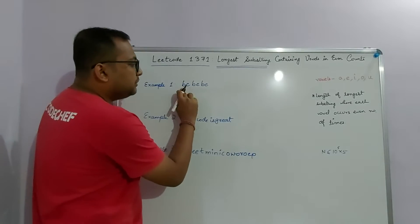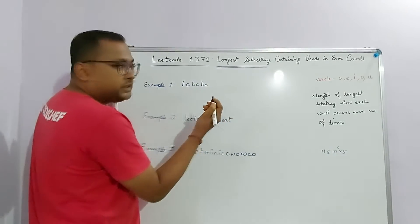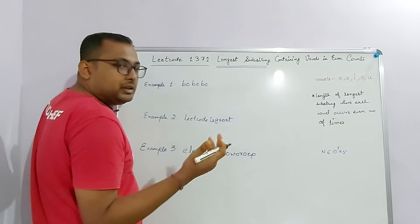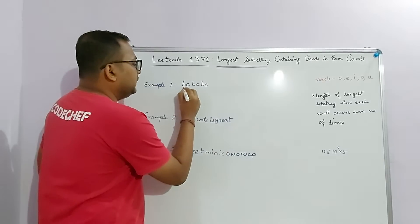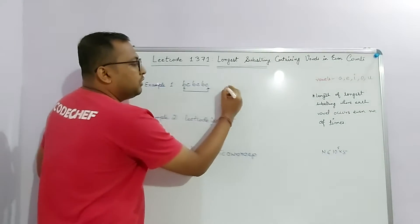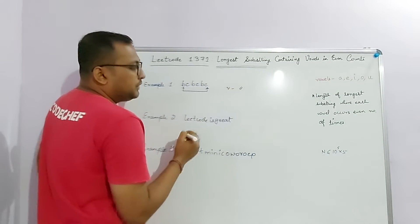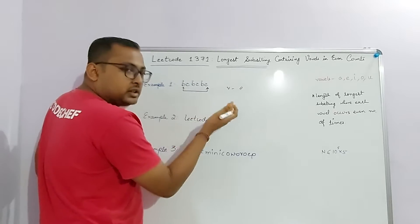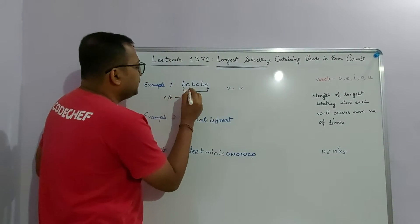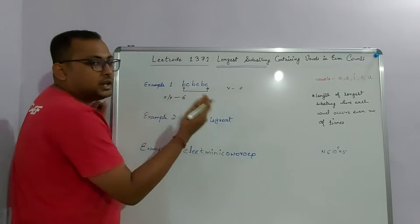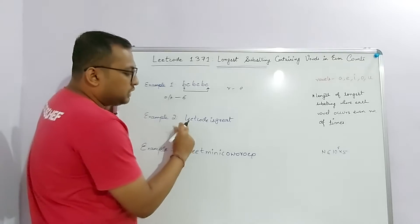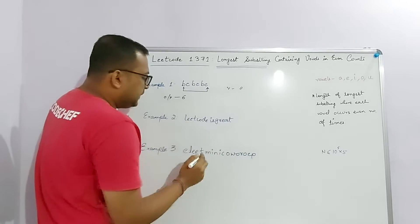Let's see some examples. The first example is the string 'bcbcbc'. If you look at the entire string, all characters are consonants and the vowels have occurred zero times, which is even. So obviously this is the largest possible substring we can achieve. The output for this problem will be 6.